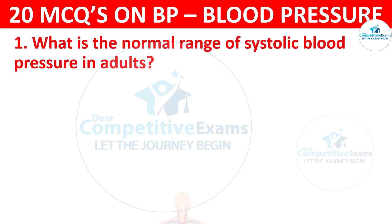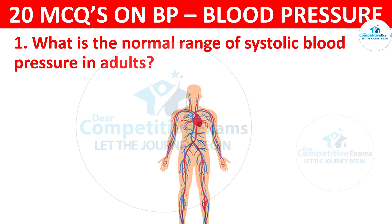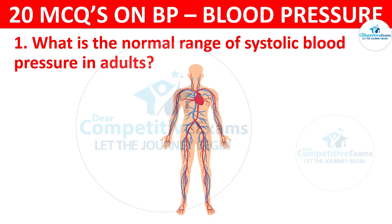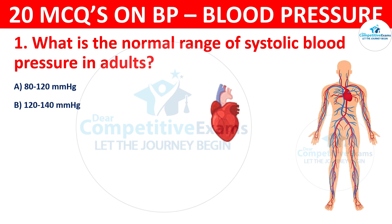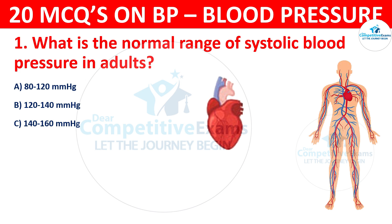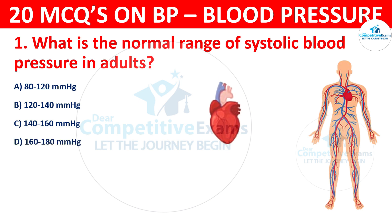Question 1. What is the normal range of systolic blood pressure in adults? Your options are: 80 to 120 mmHg, 120 to 140 mmHg, 140 to 160 mmHg, or 160 to 180 mmHg.